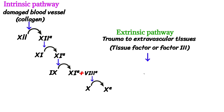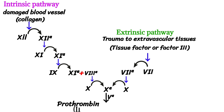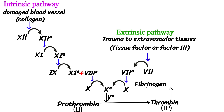In the extrinsic pathway, trauma to extravascular tissues leads to activation of factor 7, and activated factor 7 activates factor 10. Activated factor 10 and factor 5 convert prothrombin into thrombin. Thrombin converts fibrinogen into fibrin, and fibrin with activated factor 13 forms a stabilized clot.